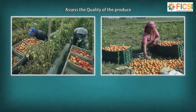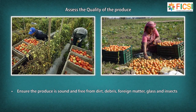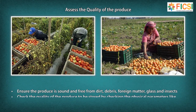Assess the quality of the produce. The technician ensures the produce is sound and free from dirt, debris, foreign matter, glass, and insects. They check physical parameters such as appearance, color, maturity, and ripeness.